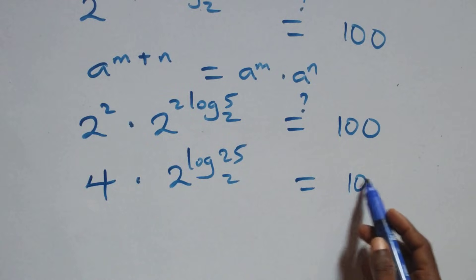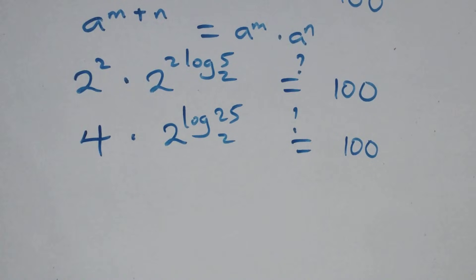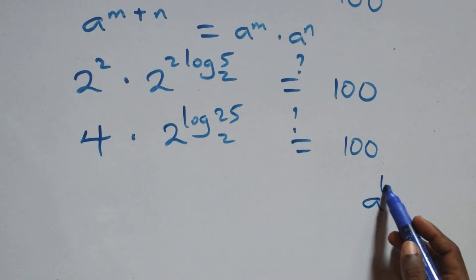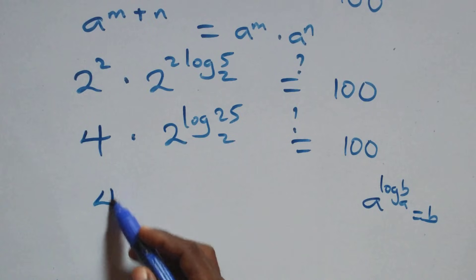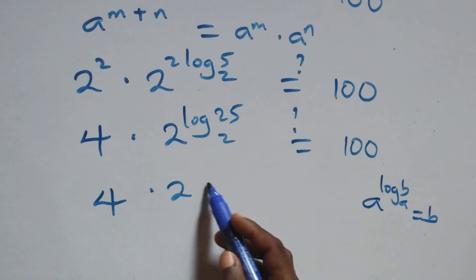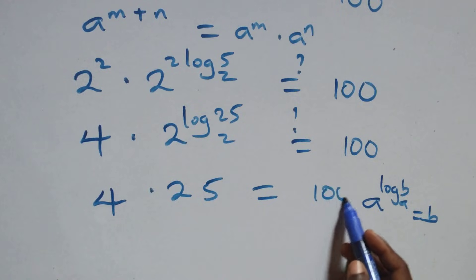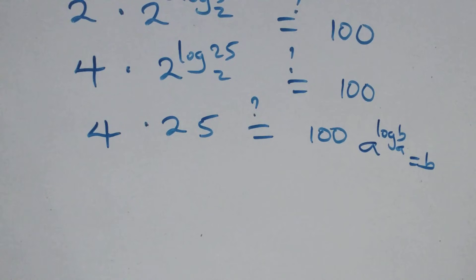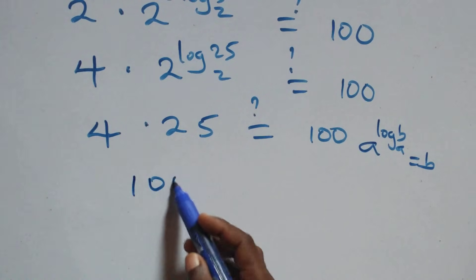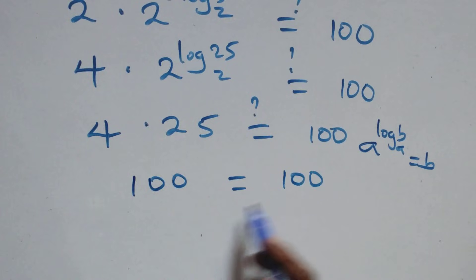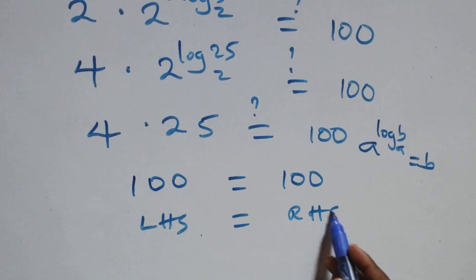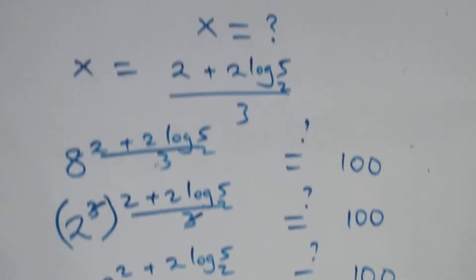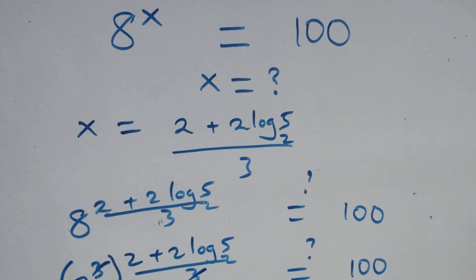This follows the rule that a raised to power log b to base a equals b. So we have 4 times 25, which equals 100 on this side. 4 times 25 is of course 100, which equals 100. Therefore the left hand side equals the right hand side, and we conclude that x equals to 2 plus 2 log 5 base 2 all over 3 satisfies the given problem.